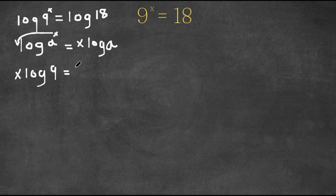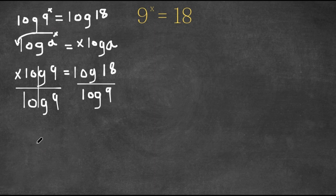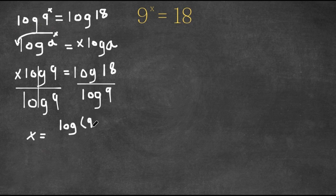And this is equal to log 18. Now, if I divide both sides by log 9, these two cancel out and I'll get x is equal to log 18 over log 9, which is the same thing as log of 9 times 2 over log 9.